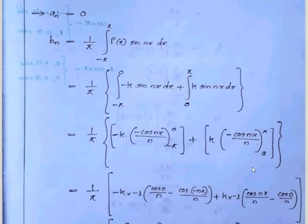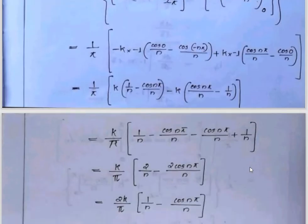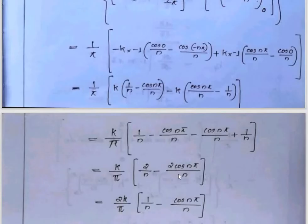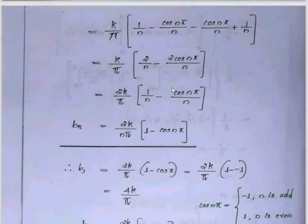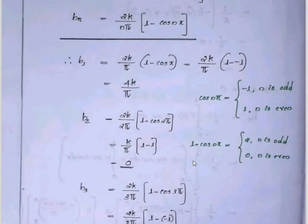For bn, we get 2k common, giving 1 over n plus 1 over n equals 2 by n times cos nπ. When n equals 1, 1 minus cos nπ equals 1 minus (minus 1) equals 2. When n equals 2, 1 minus cos nπ equals 1 minus 1 equals 0.